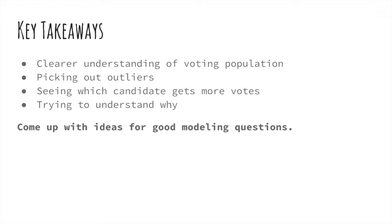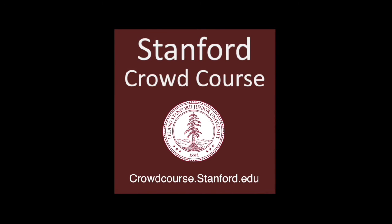The information gathered from these basic explanatory techniques can be used to help us in modeling as we move ahead. From the graphical representations, we understood which states tend to show up to vote more and which are more likely to vote for many candidates. We did simple correlation analysis and picked out outliers from the data, and formed an idea of which candidates are more likely to get more votes. Finally, we tried to understand the characteristics that define each candidate's supporters, allowing us to form potential questions for modeling — for example, which candidates are high-income white males most likely to vote for, or how about middle-income Hispanic families? That concludes our video. This course was created as part of the Stanford CrowdCourse Initiative, the world's first massive online open coursework developed entirely by an online community. Visit crowdcourse.stanford.edu to learn more.